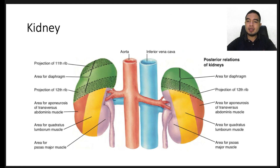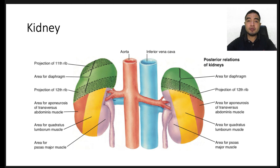The kidneys are paired retroperitoneal organs that are invested in the fibrofatty layer of tissue known as Gerota's fascia. This natural barrier helps to tamponade bleeding and thus may provide renal and hemodynamic protection in cases of renal trauma, spontaneous renal hemorrhage, or may assist in preventing tumor invasion into surrounding structures in the case of large renal masses.